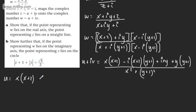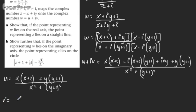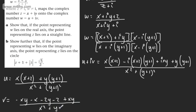Looking at the real and imaginary parts: U equals the real parts, so U = [X(X+2) + Y(Y+1)] / [X² + (Y+1)²]. For the imaginary parts, V = [−XY − X − 2Y − 2 + XY] / [X² + (Y+1)²], simplifying the numerator.